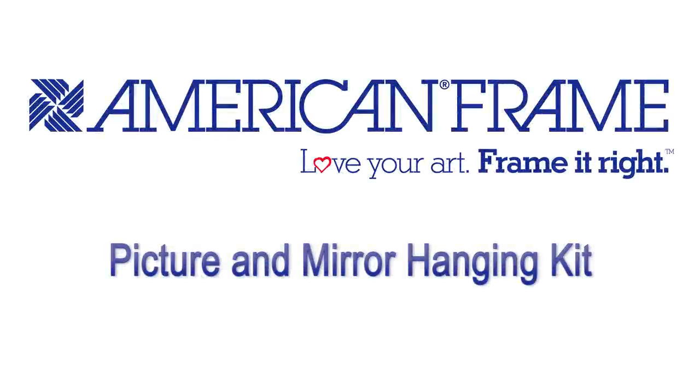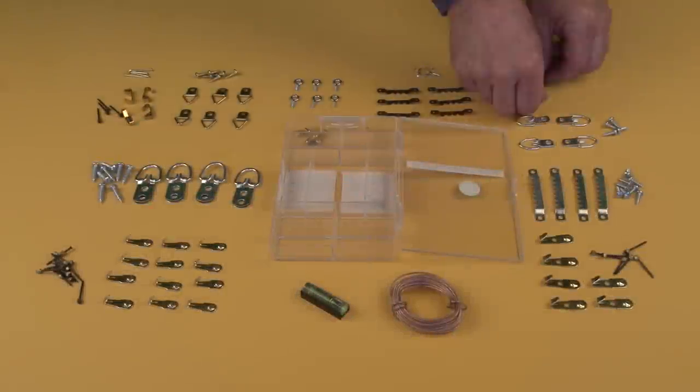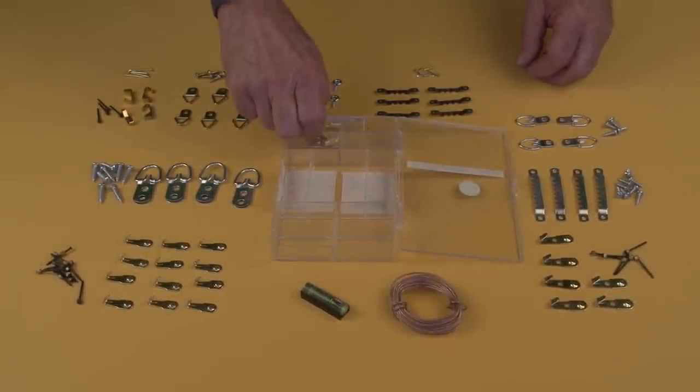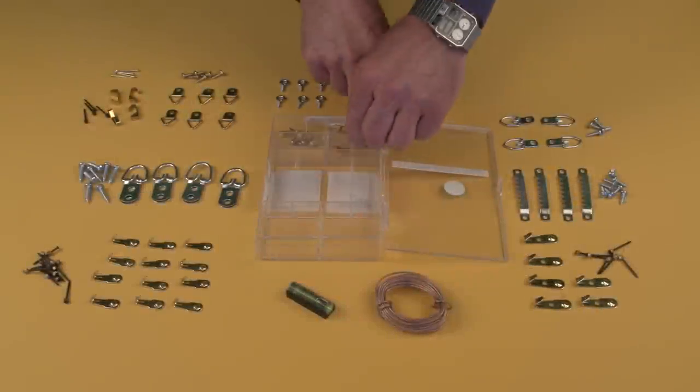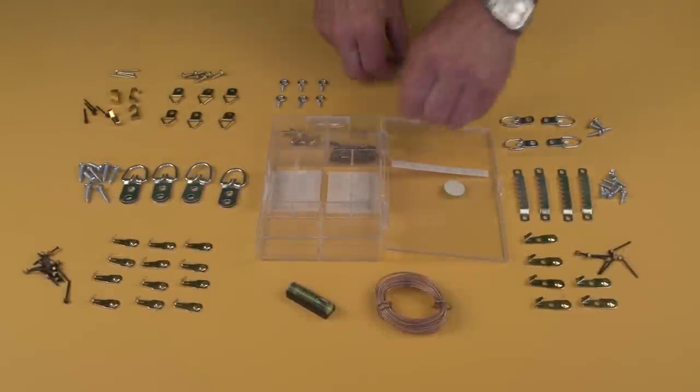The American Frame Picture and Mirror Hanging Kit. Our kit includes four pieces of 10-pound picture hangers with neural nails, six pieces of sawtooth hangers with nails.